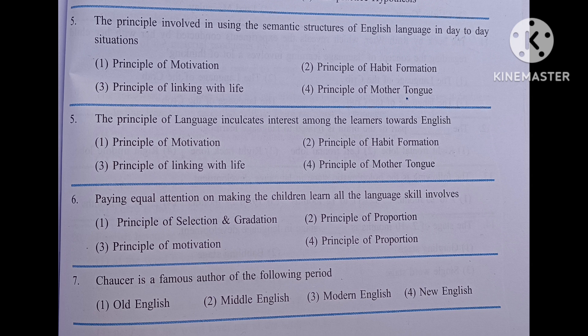Stephen Krashen's theory of second language acquisition does not contain: number one, input hypothesis; number two, natural order hypothesis; number three, the acquisition hypothesis; number four, the practice hypothesis. The answer is the practice hypothesis.